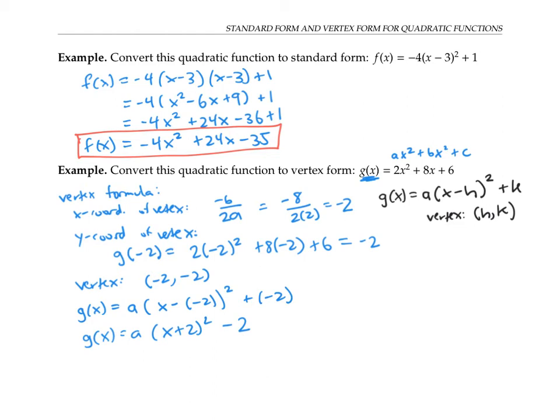And finally, we just need to figure out what this leading coefficient a is. But notice if we were to multiply and distribute this out, then the coefficient of x squared would end up being a. So therefore, the coefficient of x squared here has to be the same as the coefficient of x squared here. In other words, our a down here needs to be two.